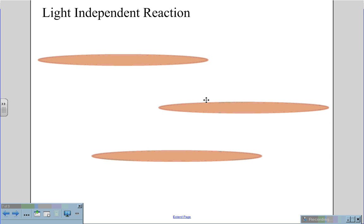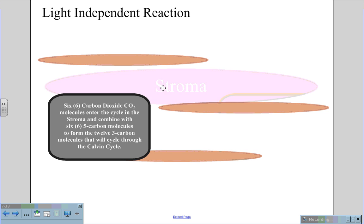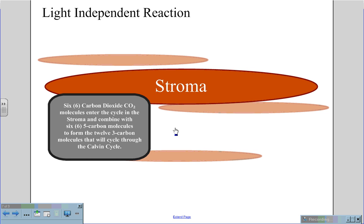In the light-independent reaction, we have the stroma, which is the bridge between the grana stacks. And in this process, you have six molecules of carbon dioxide, and these enter the cycle in the stroma.